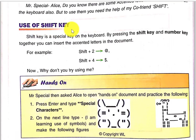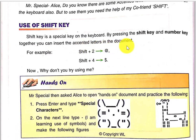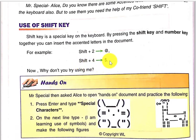What is the use of the Shift key? The Shift key is a special key on the keyboard. By pressing the Shift key and a number key together, you can insert special characters in the document. On your keyboard, numbers 1 through 9 are written, and above each number there is a symbol — exclamation mark, at sign, hash, dollar, and so on. There are two symbols on each number key. For example, pressing Shift + 2 prints the at sign, and pressing Shift + 4 prints the dollar sign.